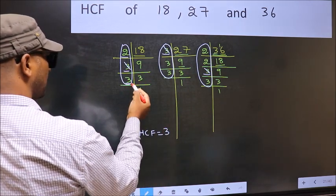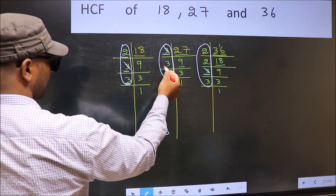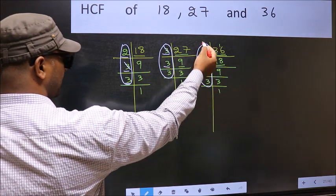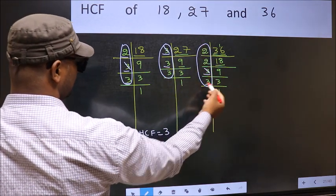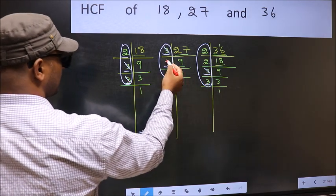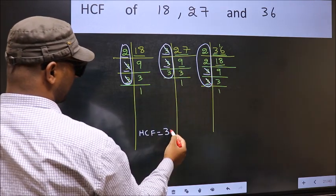Next number 3. Do we have 3 here? Yes. Go to the next place. Do we have 3 here? Yes. So cut 3 and write here.